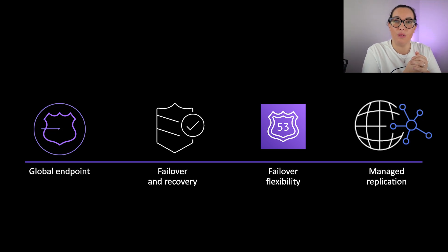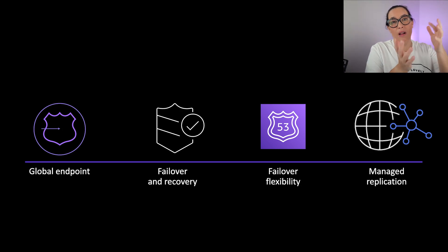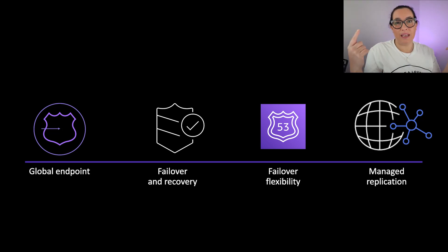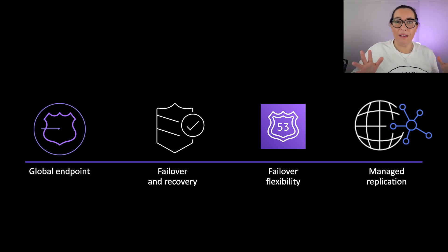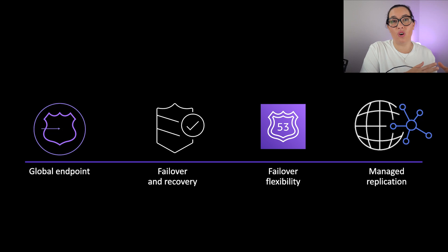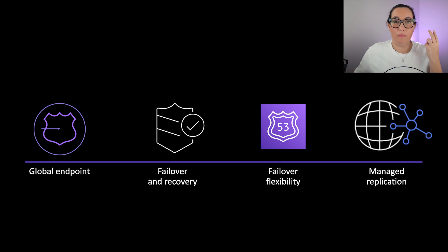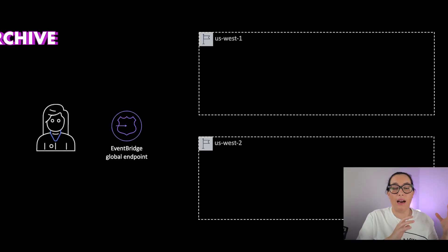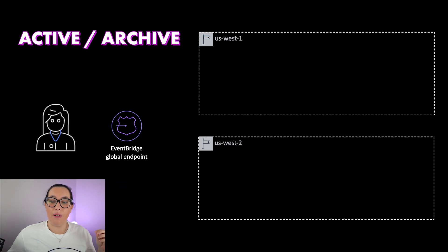There are Route 53 health checks — EventBridge will do the failover. If the primary region is not healthy, the failover will happen and traffic will go to the secondary region. There is also automatic replication of events between the two regions, so events are never lost. Global Endpoints is designed to support two different strategies: the backup-and-restore strategy and the active-active strategy.